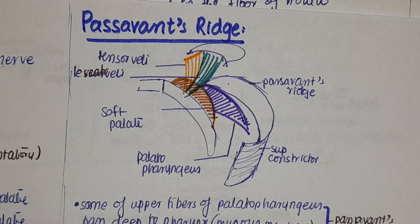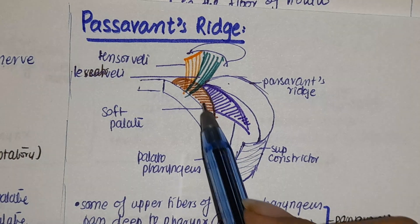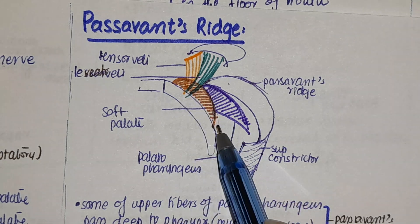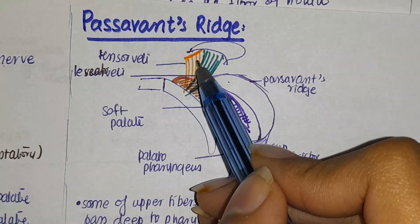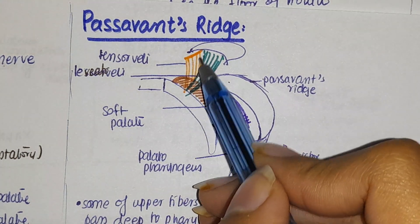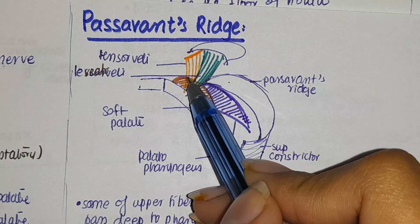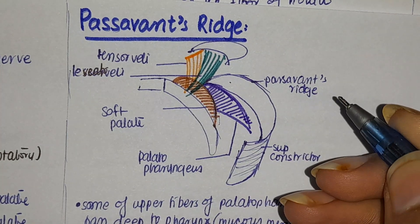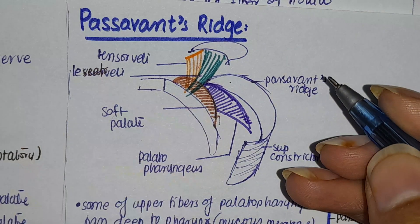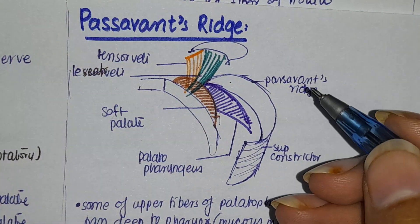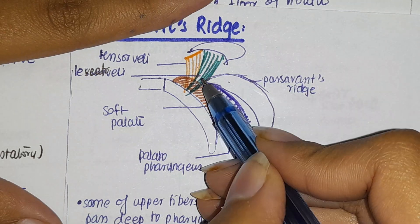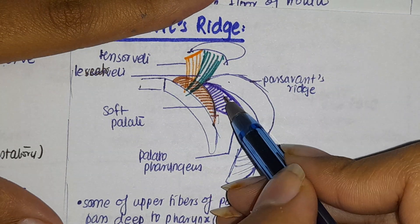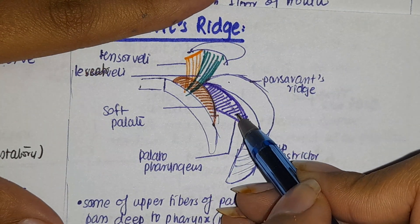First of all, you have your soft palate. In the soft palate there is the muscle tensor veli palatini, which forms the palatine aponeurosis. On the palatine aponeurosis there are two muscles: the levator veli palatini and the palatopharyngeus muscle.